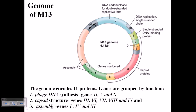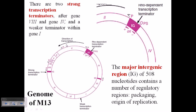Some of the genes can be transcribed continuously, some independently, and they originate from two different origins. From one origin, replication can go in a clockwise direction; from the other, it proceeds in an anti-clockwise direction. So both directions of replication are possible. There are two strong transcription terminators present after gene 8 and gene 4.